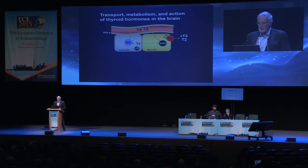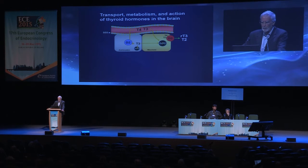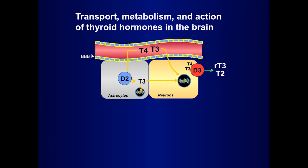The study of MCT8-deficient mice has also helped us to prove the model we established many years ago based on the expression of Deiodinase 2 and 3 in the brain. We propose that circulating T4 and T3 can enter the brain, and T3 may enter directly through the blood-brain barrier and be available to neurons or astrocytes. Another way of intra-brain T3 formation would be the deiodination of T4 taking place in the astrocytes.